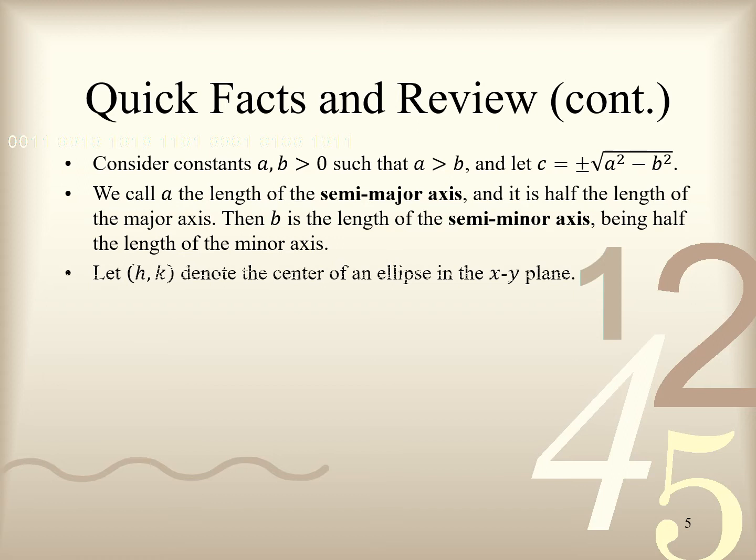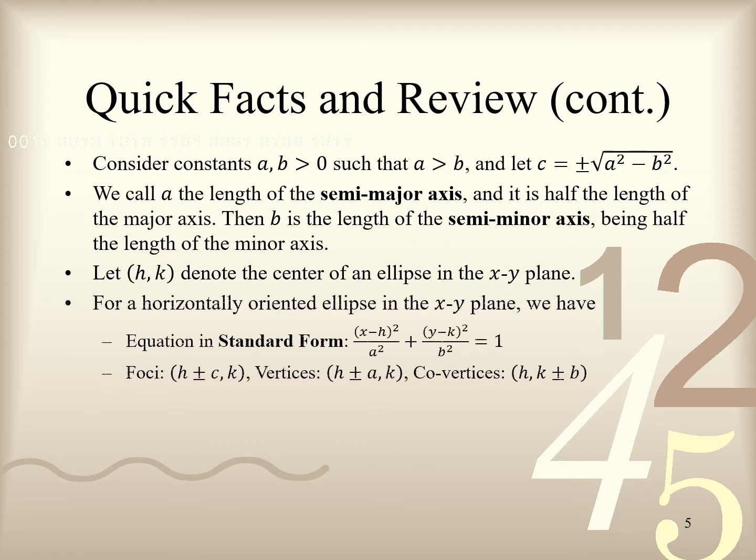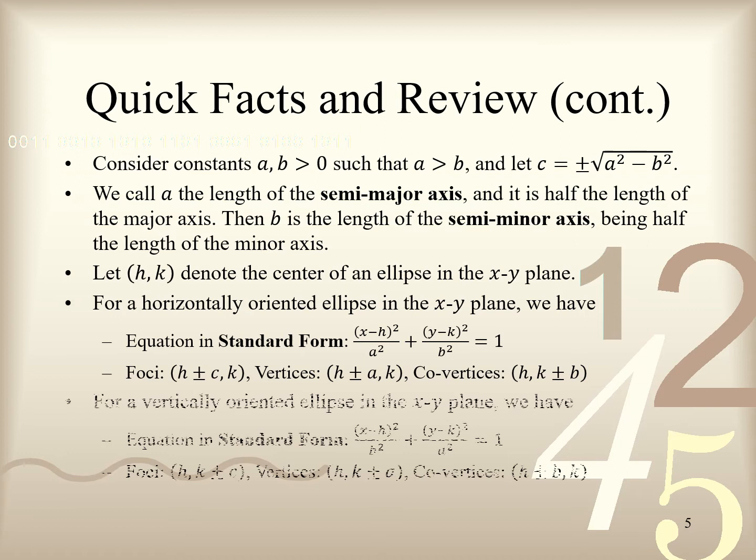Let the point (h, k) denote the center of an ellipse in the x-y plane. Then, for a horizontally oriented ellipse, its standard form equation, foci, vertices, and co-vertices are given as follows. Similarly, for a vertically oriented ellipse, its standard form equation, foci, vertices, and co-vertices are given as follows.